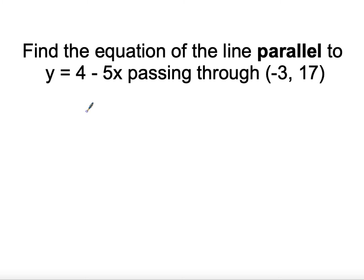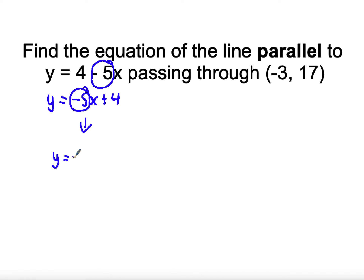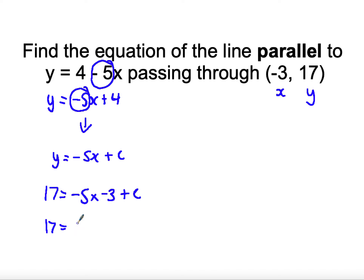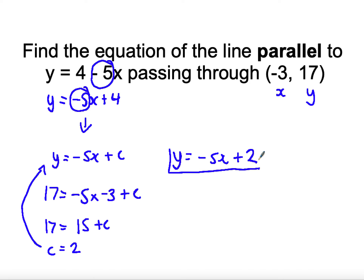This one is written in reversed form, so it's helpful to rewrite it as y equals negative 5x plus 4, where the gradient is negative 5. Parallel to that will be y equals negative 5x plus c. Substituting the point (negative 3, 17): 17 equals negative 5 times negative 3 plus c, so 17 equals 15 plus c, giving c equals 2. Therefore the equation is y equals negative 5x plus 2. Check: negative 5 times negative 3 is 15, plus 2 gives 17. Correct.